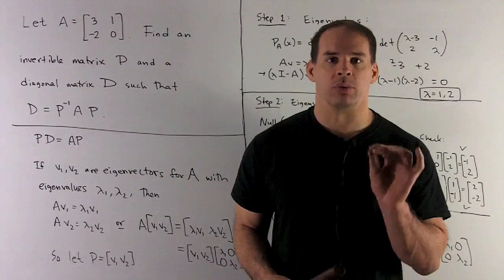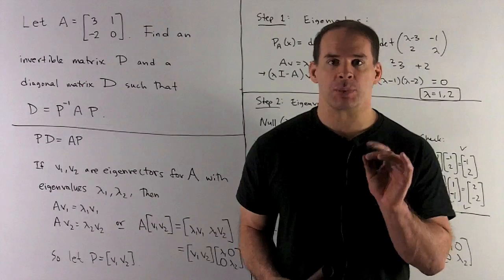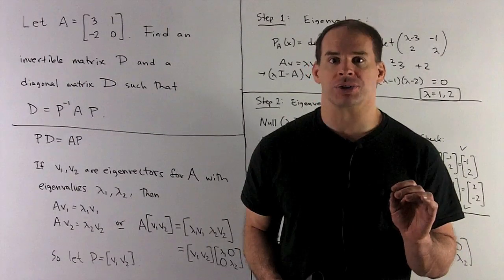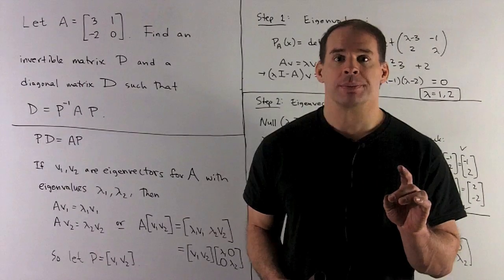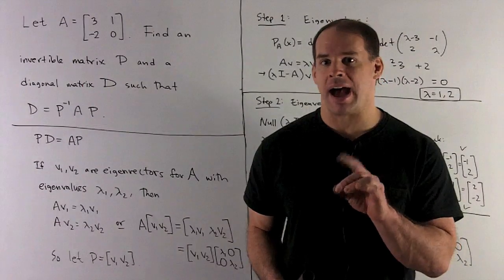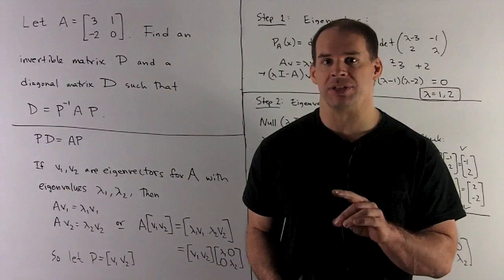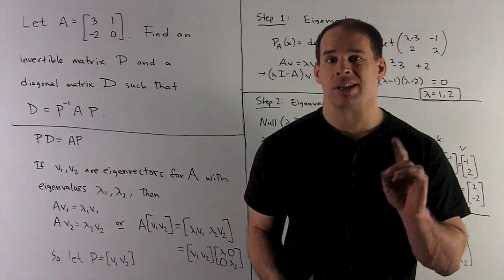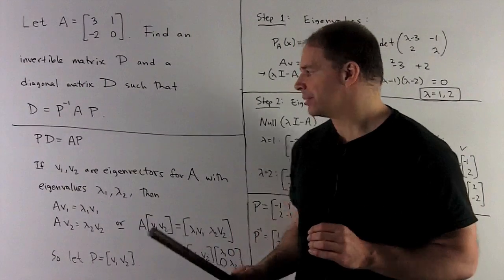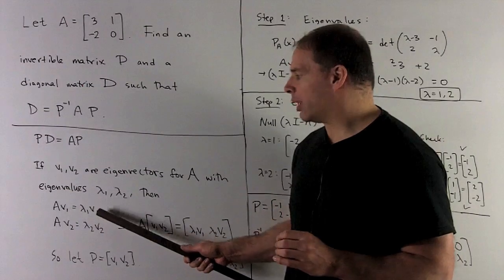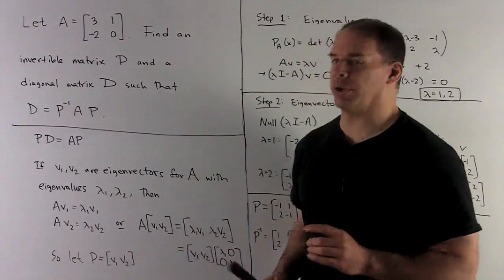Now, what are we really asking for here? So this problem is about eigenvalues and eigenvectors. If I know my eigenvalues and eigenvectors, let's suppose we have eigenvectors V1 and V2 with eigenvalues lambda 1 and lambda 2, respectively. That just says AV1 equals lambda 1 V1, AV2 equals lambda 2 V2.